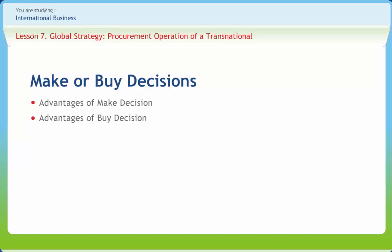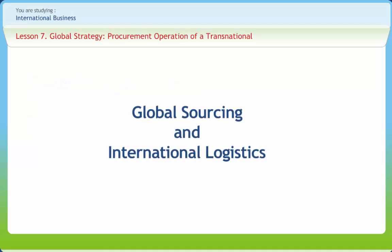Advantages of make decisions include lower cost, facilitating specialized investments, proprietary product technology protection and improved scheduling, while advantages of buy decisions include strategic flexibility, lower costs and offsets. In order to reap the benefits of vertical integration without the associated operational problems, transnational firms operate by entering into strategic alliances with essential suppliers.